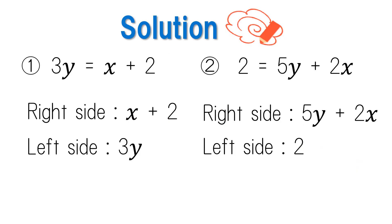Now let's check our answers. The right-hand side for number one is 3y and the left-hand side is x plus 2. Therefore, the equality obtained by switching the right and left-hand sides is 3y equals x plus 2.